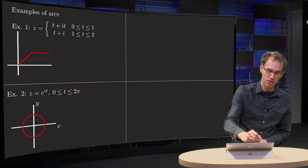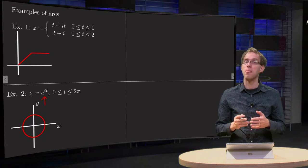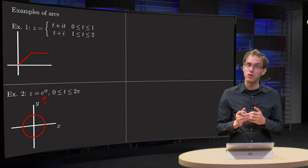Another easy parameterization: z equals e to the power i t, for t between 0 and 2π. You see the norm of z is constant, so we will be on a circle.